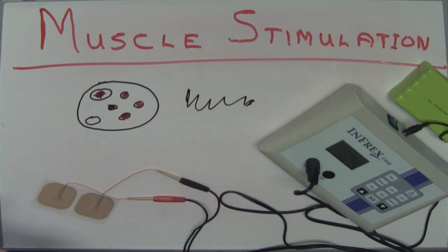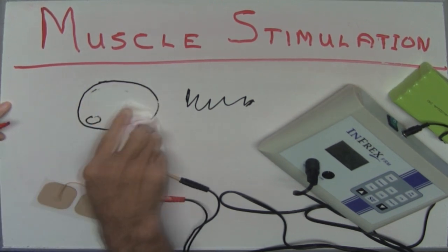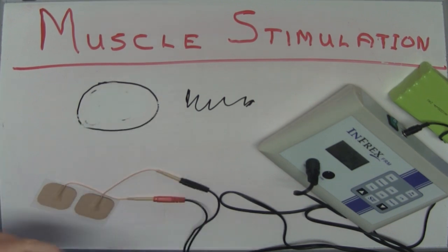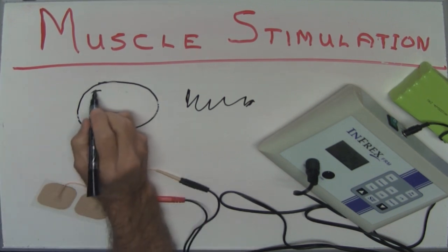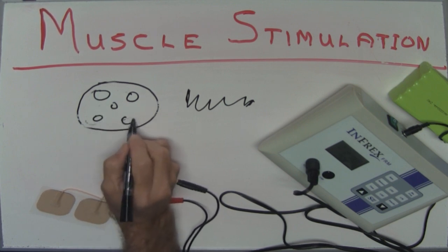Now when you use electric stimulation we got a different thing. Remember we're going from small to large. With electric stimulation muscle stimulation we again have big, we have little, we have medium and we have less than medium.